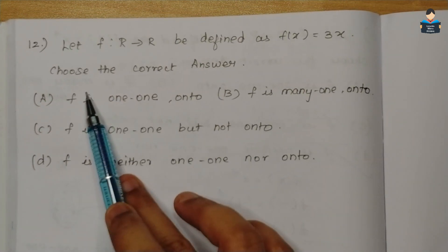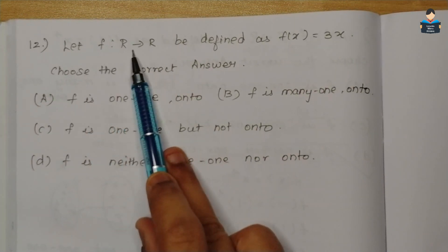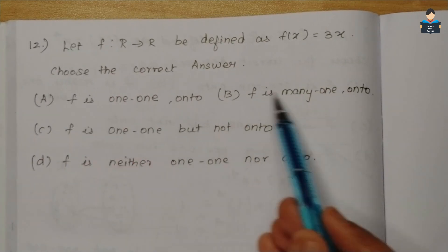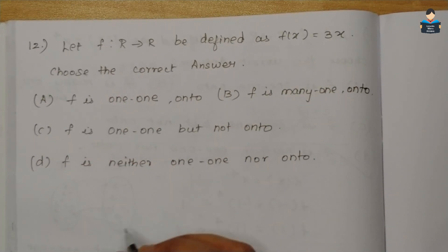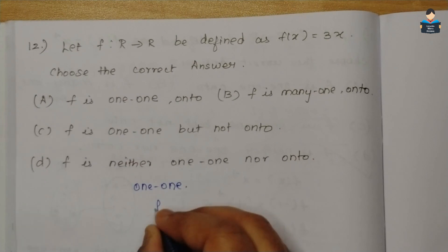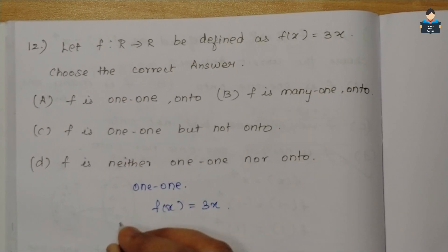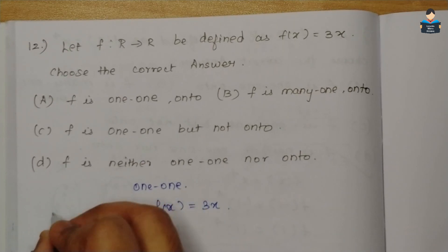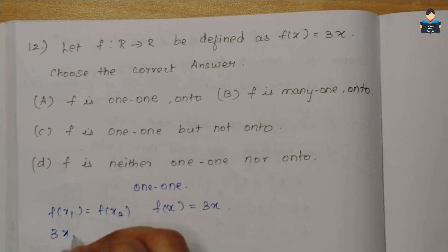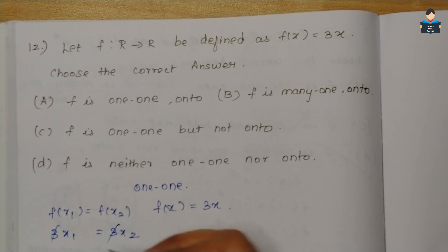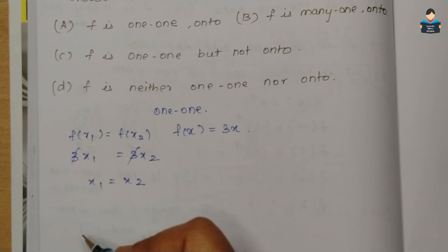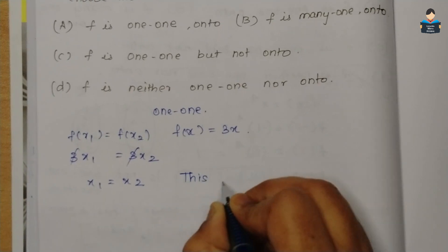Question 12 is an MCQ. The function f: R → R is defined by f(x) = 3x. First, checking one-to-one: assume f(x₁) = f(x₂), so 3x₁ = 3x₂. Dividing both sides by 3 gives x₁ = x₂. Therefore f is one-to-one.